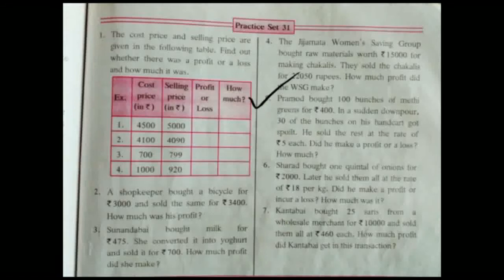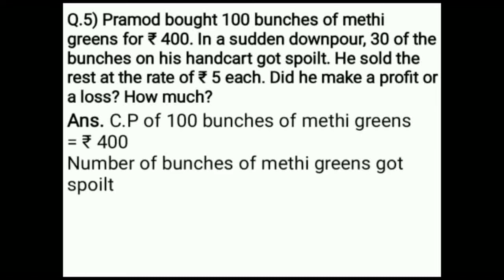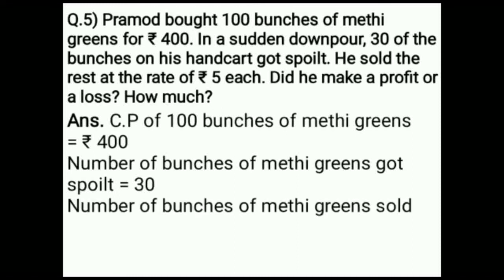Pramod bought 100 bunches of methi greens for Rs. 400. In a sudden downpour, 30 of the bunches on his hand cart got spoiled. He sold the rest at a rate of Rs. 5 each. Did he make a profit or a loss? Cost price of 100 bunches of methi greens is Rs. 400. Number of bunches spoiled is 30. Number of bunches sold is 100 minus 30 equals 70. The remaining 70 bunches of methi greens were sold.